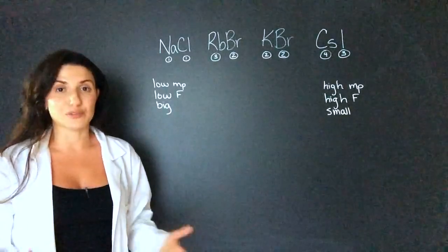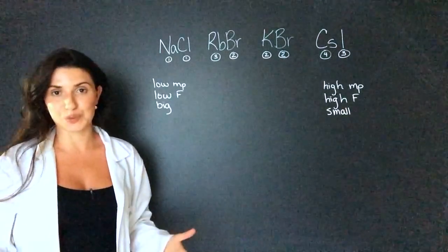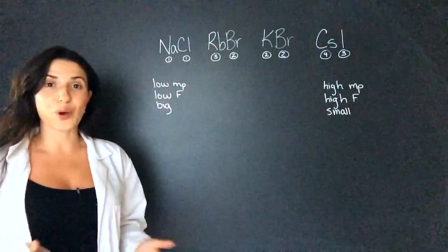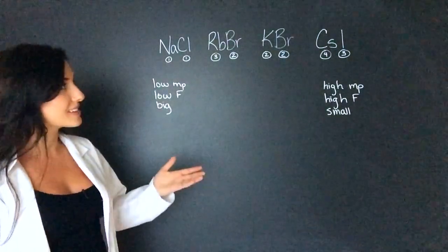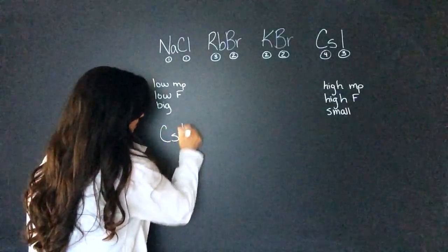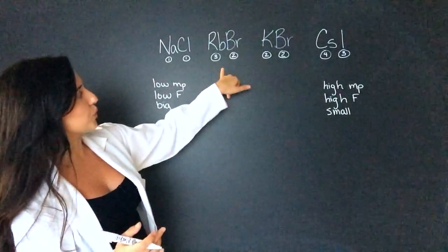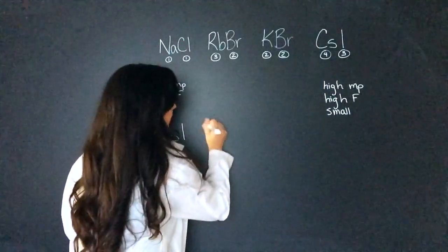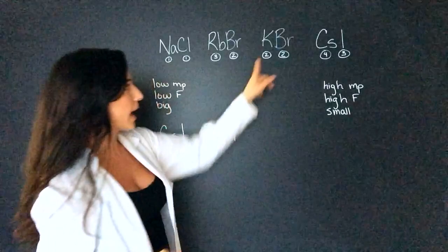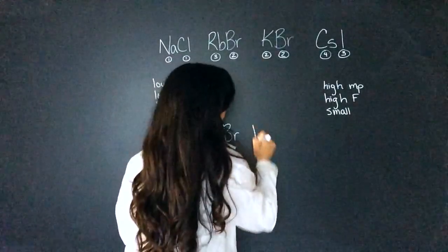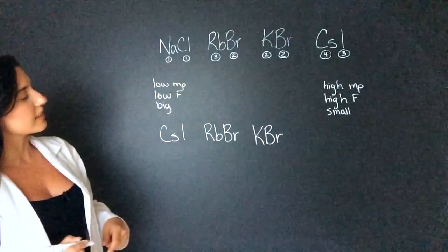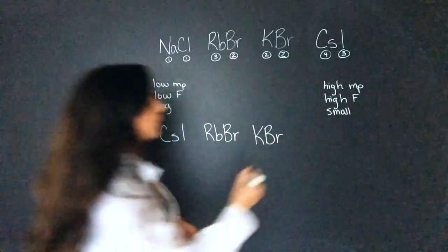Remember that force is inversely proportional to the distance between the ions, aka the size of the ions. So the biggest ions are cesium iodide. Then the second biggest would be rubidium bromide. Then we have potassium bromide. And last but not least the smallest of them all is sodium chloride.